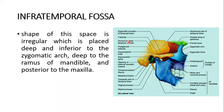The shape of the infratemporal fossa is irregular. It is placed deep and inferior to the zygomatic arch, deep to the ramus of the mandible, and posterior to the maxilla.